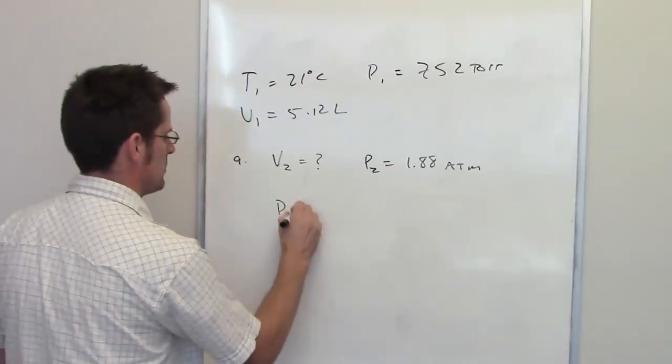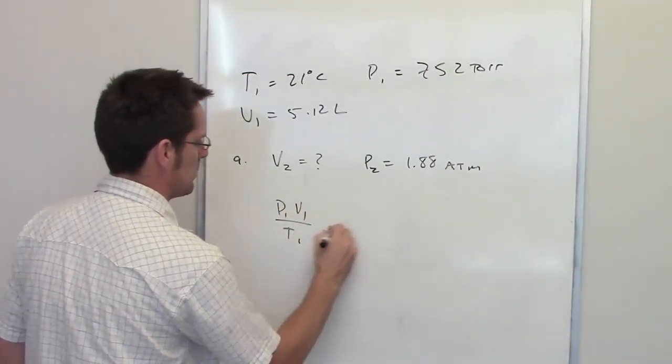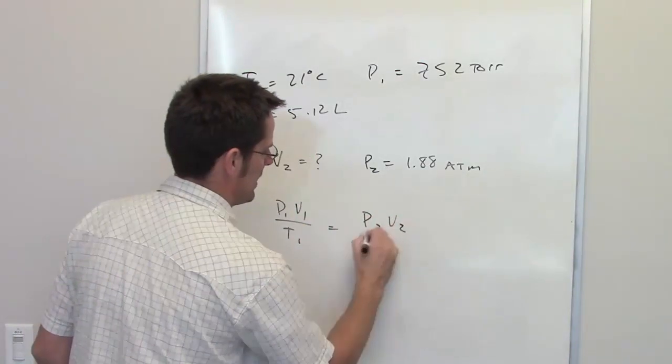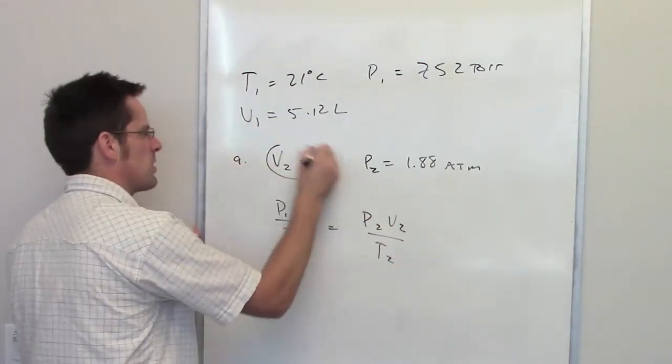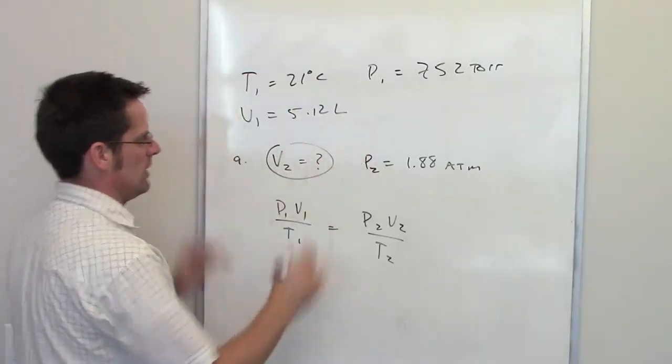The combined gas law says that P1 times V1 divided by T1 is equal to P2 times V2 divided by T2. This is a case where we're trying to determine what the final volume is going to be if all else is held constant.